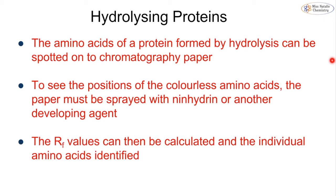When we hydrolyse a protein we can confirm which amino acids are present using chromatography. At international A level we don't need to know too much about how we carry out chromatography of proteins specifically, though you did learn about chromatography back in topic 15. To give a brief overview: the hydrolysis reaction takes place, we spot onto the chromatography paper and run the chromatogram. The problem is that the amino acids are colourless, so we have to spray them with a developing agent — the most common one used is called ninhydrin.